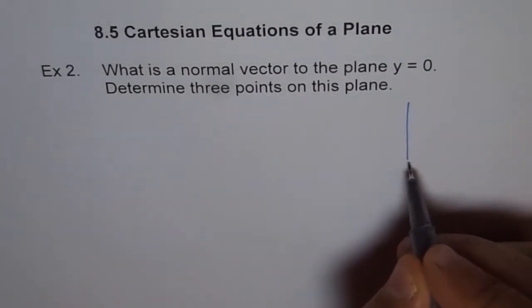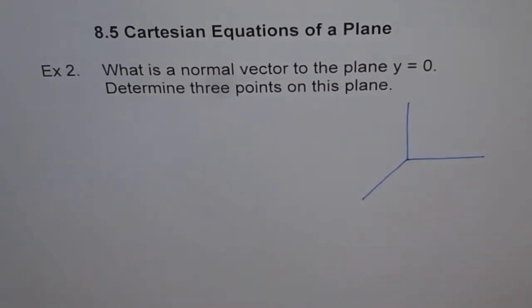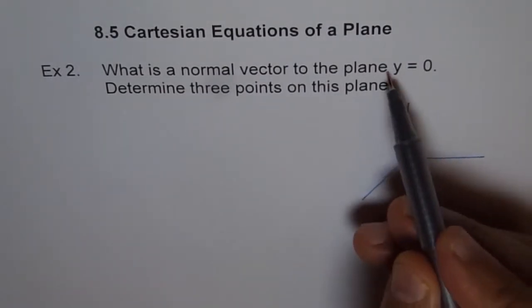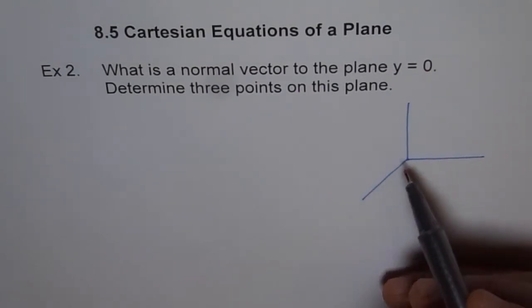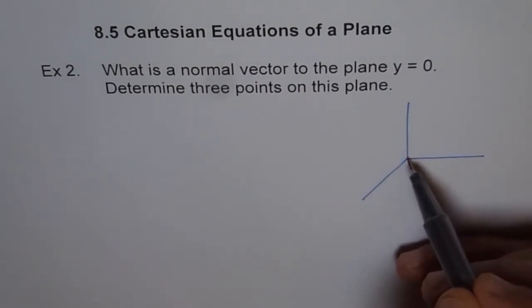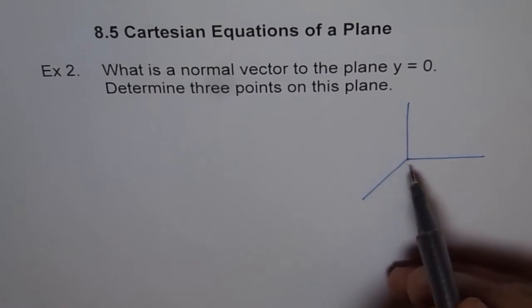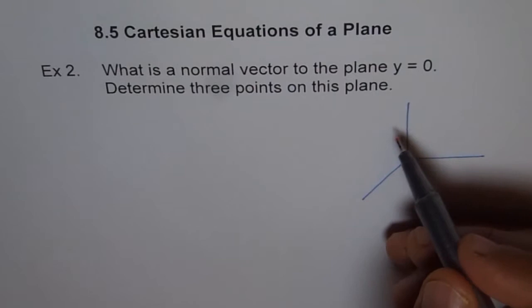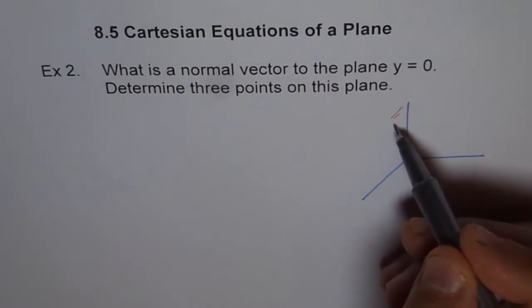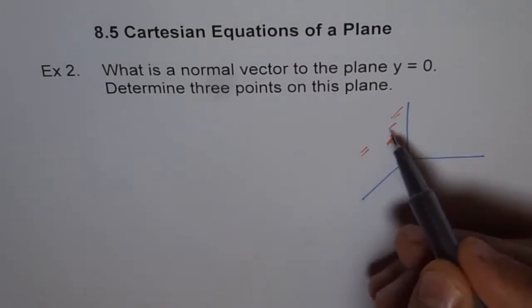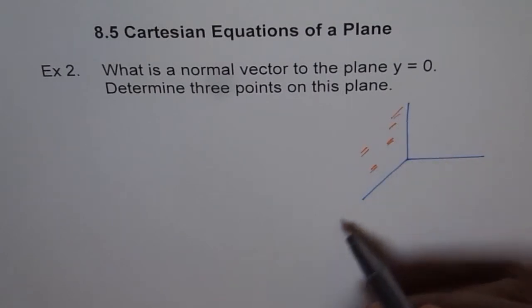So let me first draw our axis. Here is our x, y, z axis. When we say y equals 0, that means we could move along the x side and we could move along z, but not along y. That is what we are saying y is 0. That means we are restricted to this plane.